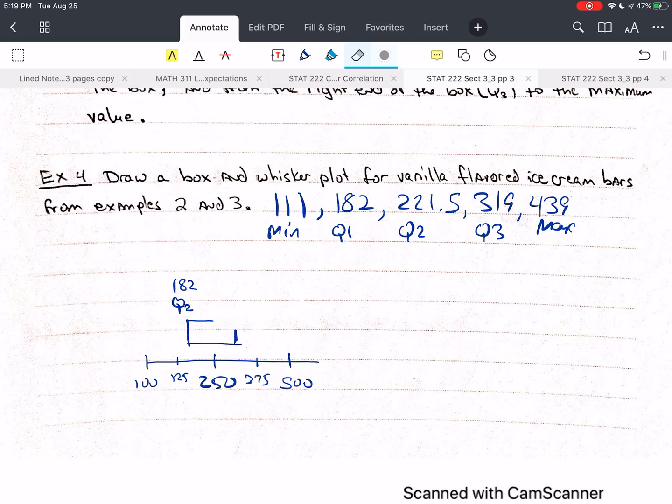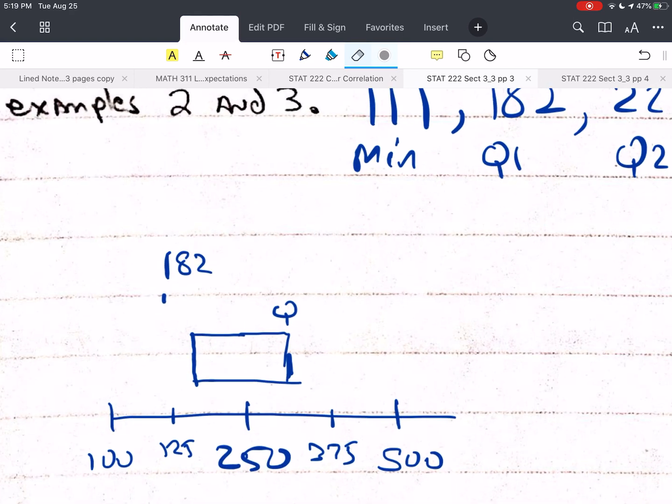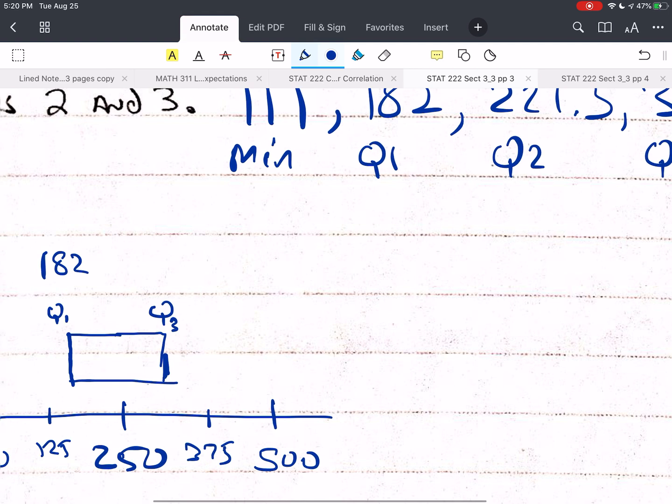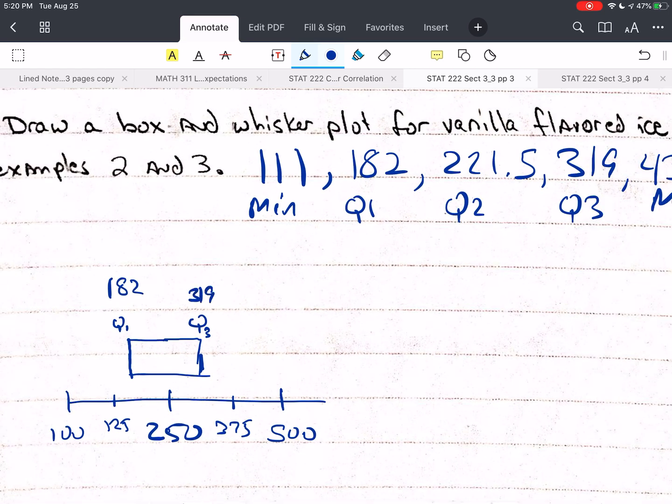And then we're going to draw all the... and this is going to be Q... so that was not Q1. I mislabeled that. Sorry, this is Q1. This is Q3. And Q3 is 319. And then we need Q2. So that's around 221. I'm going to say that that is about here. So this will be Q2 and 221.5. So this is going to be representative. I'm looking at the distance between this value and this value, and then this value and this value. And the distance from 221.5 to 182 is 39.5. And the distance from 221 to 319 is 97.5. So it's much closer to Q1. Q2 is much closer to Q1 than it is Q3.